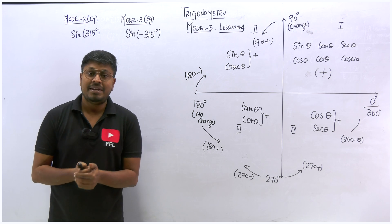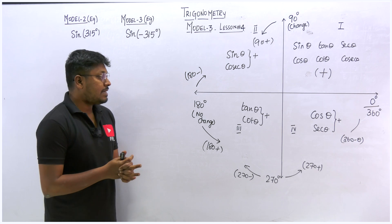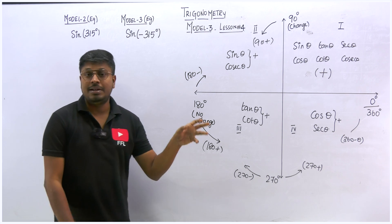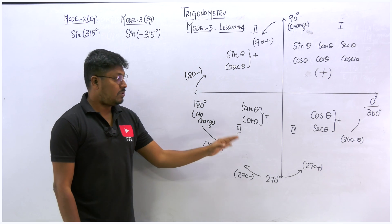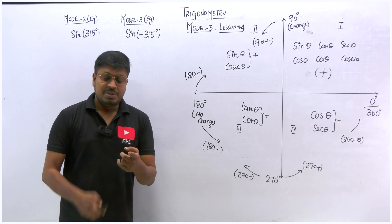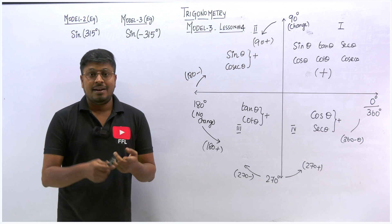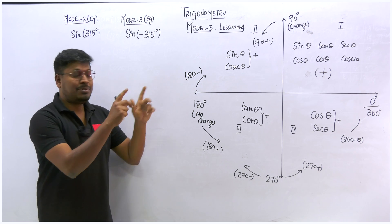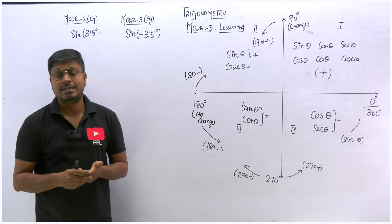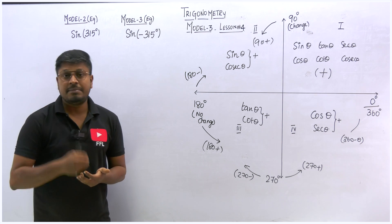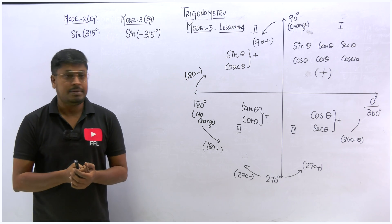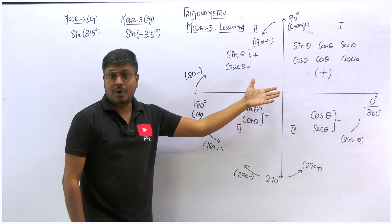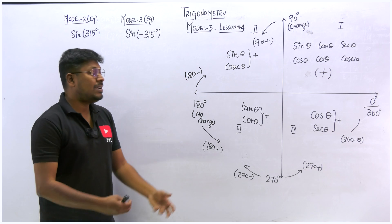Thanks for being here on my YouTube channel. This is lesson number 4 on trigonometry. We are going to solve a question on model number 3. Before watching this video, make sure to watch all previous videos first — lesson 1 was an introduction to trigonometry, lesson 2 covered model 1 based on trigonometrical ratios and the table chart for 0°, 30°, 45°, etc., and lesson 3 covered model 2 concepts, including this complete chart.